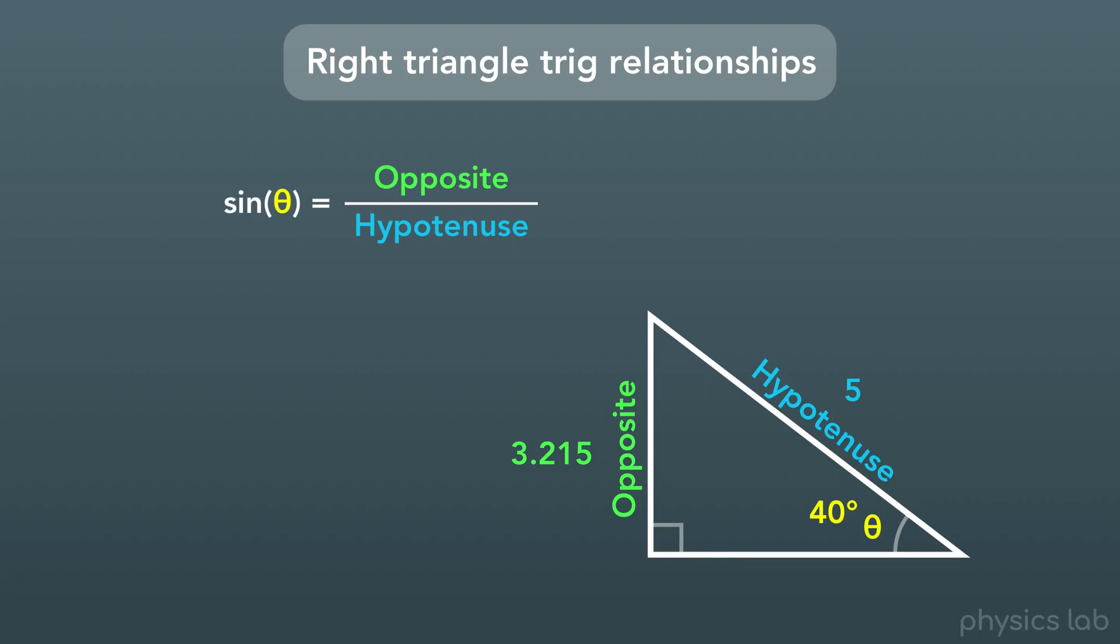Well sine is what we call a function, and it's built into your calculator. So if you type sine of 40 degrees into your calculator, it'll give you 0.643.